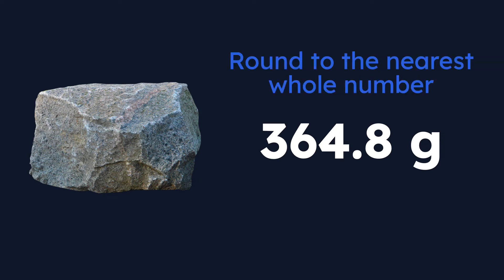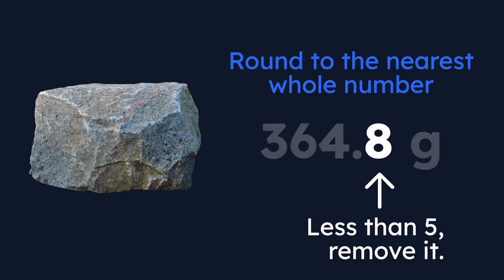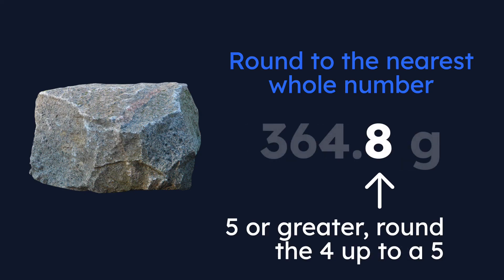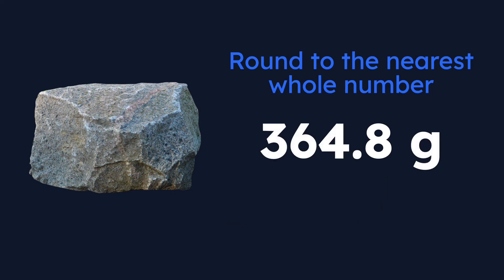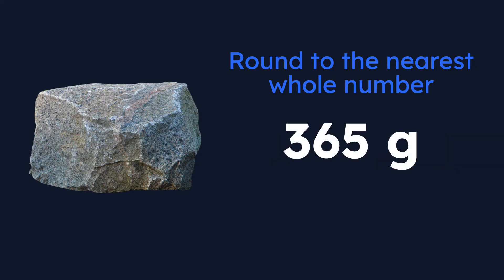We could also be asked to round to the nearest whole number. The nearest whole number has no decimals past it. So if we look at the four in this example, that's the whole number we're targeting. We have to look at the digit one place past the decimal to figure this out. That number is an eight, which is greater than five, so it bumps our four up to a five. Rounding this number to the nearest whole number turns it into 365 grams.